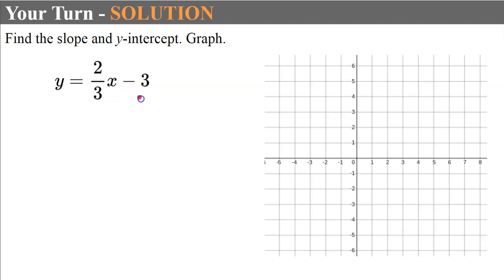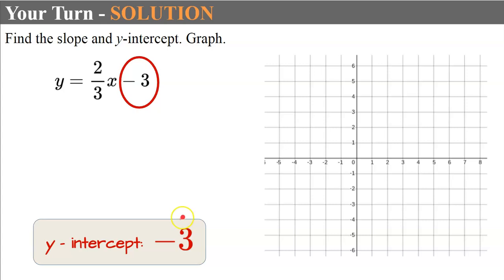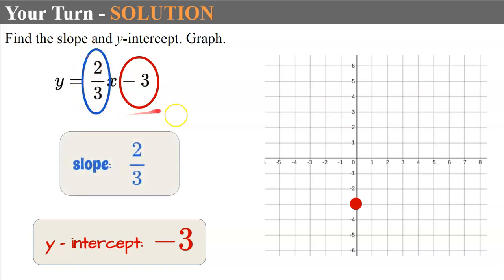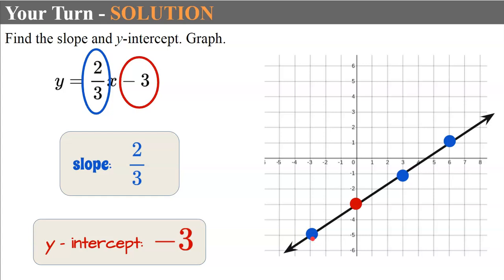Welcome back. Our y-intercept is negative 3, so we plot that point on our graph. Our slope is two-thirds, so we rise 2 and run 3, then rise 2 and run 3 again. We could also rise negative 2 and run negative 3, since negative 2 divided by negative 3 is still positive two-thirds. And there we have our line.